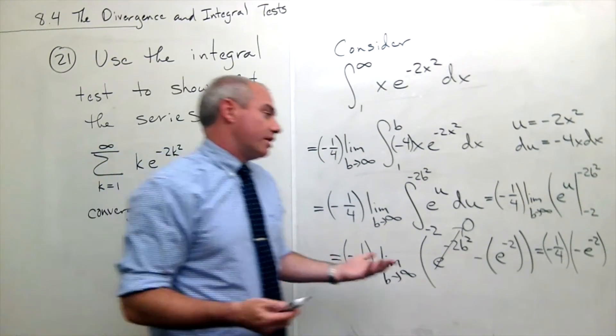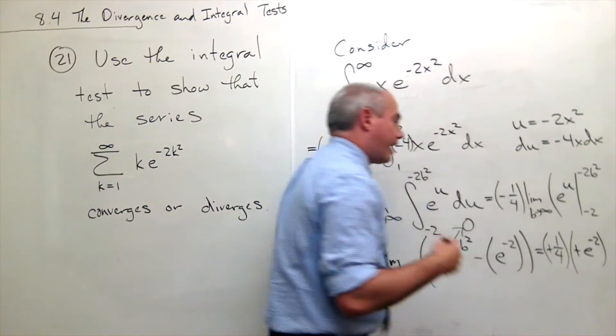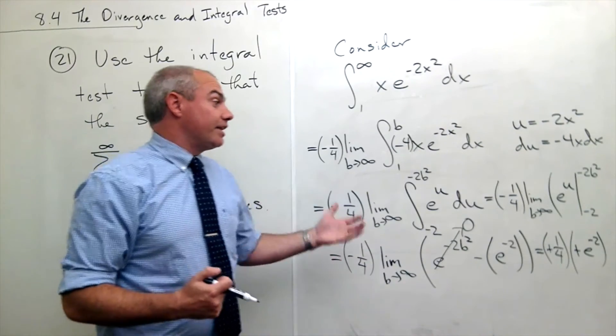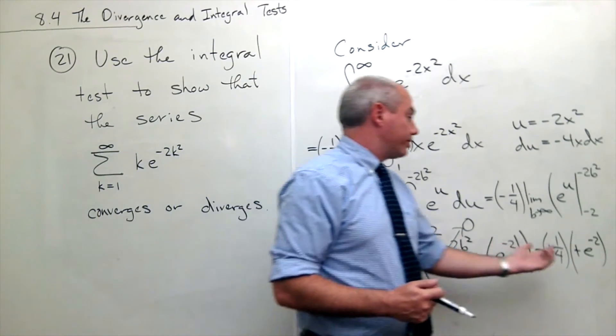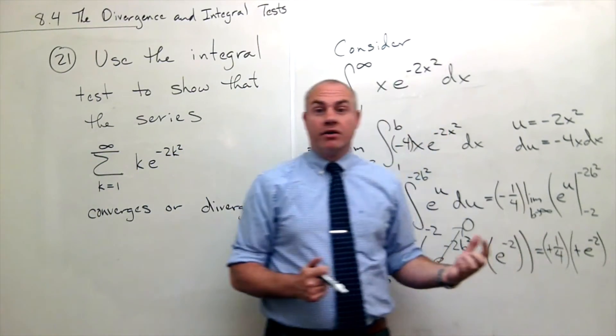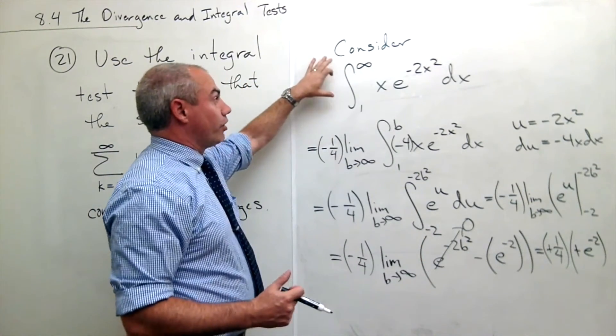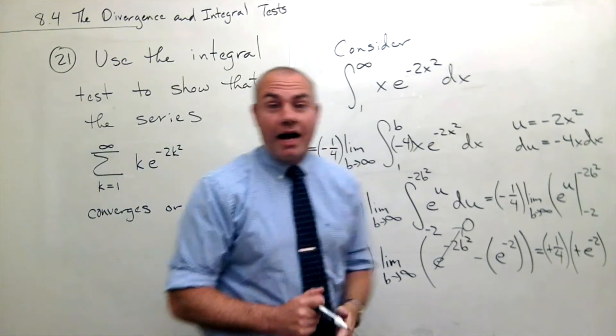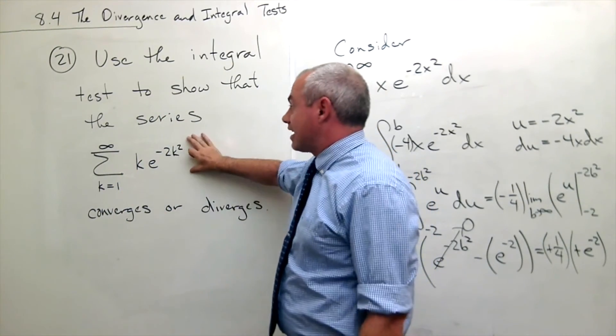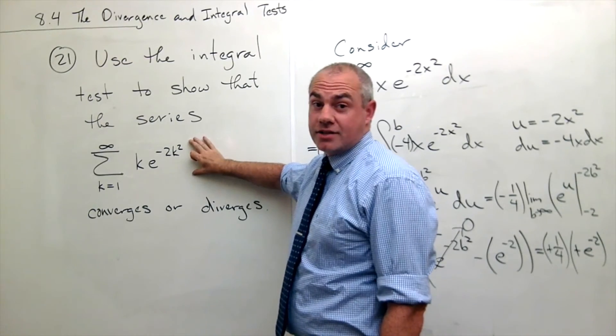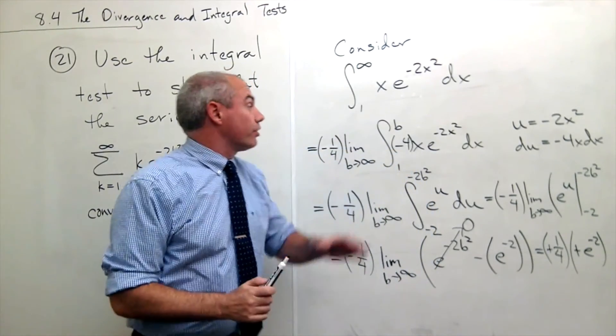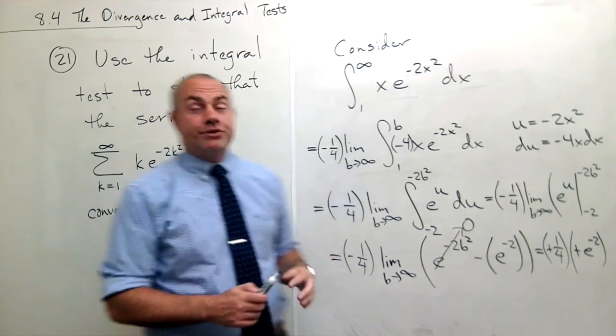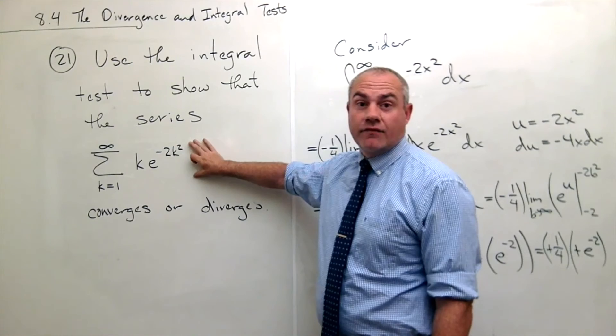The negatives cancel. I could rewrite that as 1 over 4 e squared if you like. But at the end of the day all I really care about is that that's a number. It converges. This integral converges. What does that mean for me? I did this whole thing to figure out does this series converge. Because I used the integral test I figured out that this integral converges, which means that this series converges.